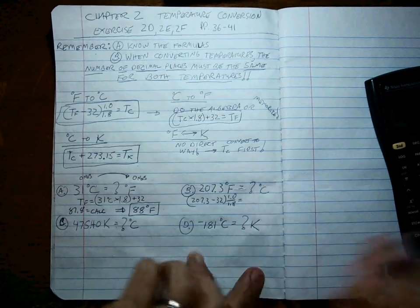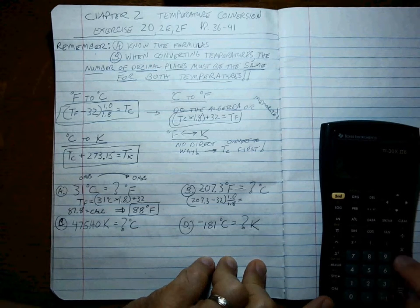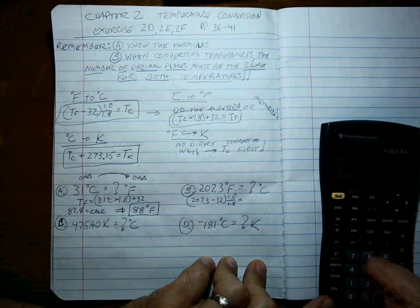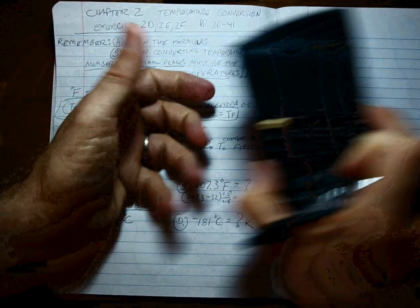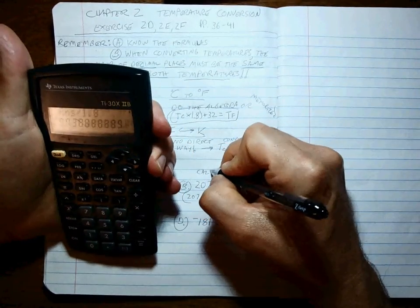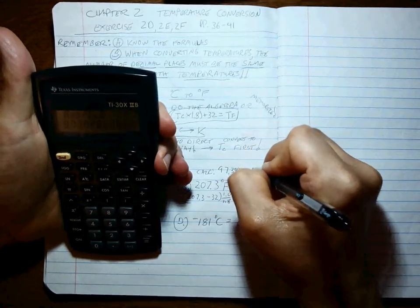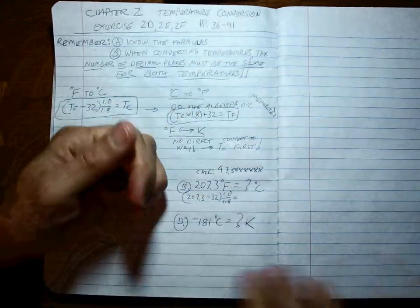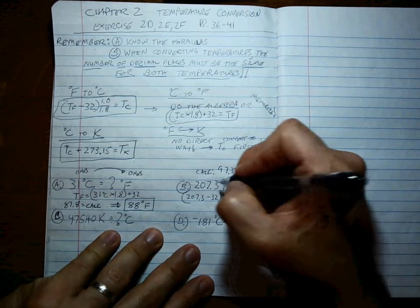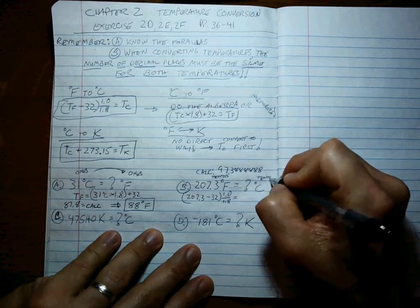And that gives us what? 207.3 minus 32 is equal to, divided by 1.8 is equal to. I get, calculator-wise, 97.388888. Clearly that's not the right answer, but what is? Well, it's not about number of significant figures. It's about tenths place. So this answer has to be to the tenths place. That's all. So we've got 97.4 degrees C.